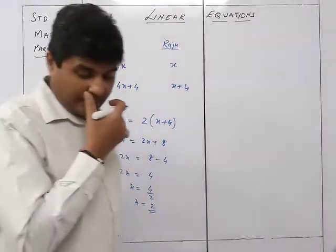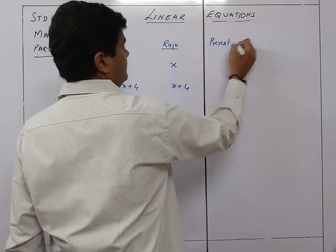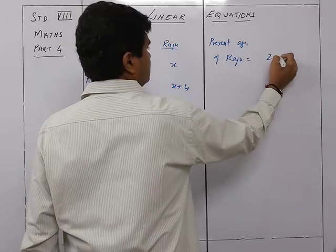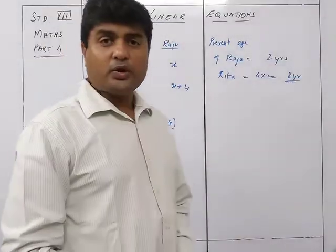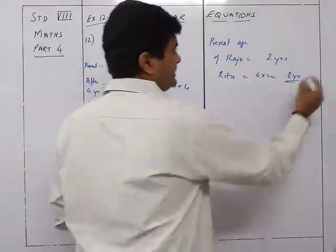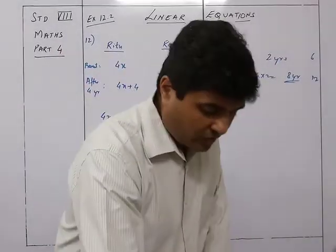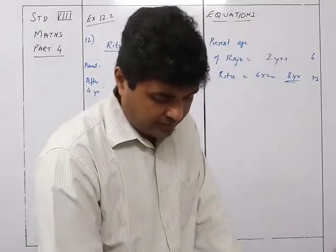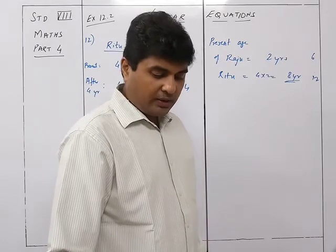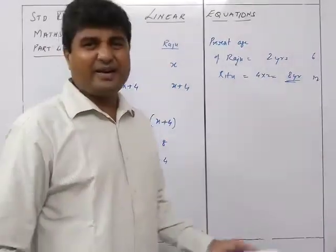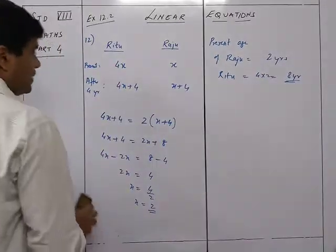So the present age of Raju is 2 years and the present age of Ritu is 4 into 2 = 8 years. Cross-checking: after 4 years Raju will be 6 and Ritu will be 12, and 12 is double 6 — correct. Always write the answer with names: age of Ritu is 8 years and age of Raju is 2 years. That was sum number 12.